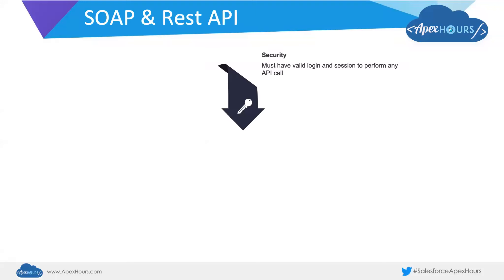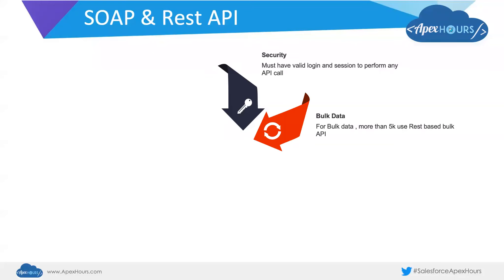For bulk data loads, there are REST-based bulk APIs inside Salesforce. As a best practice, if you need to process more than 50,000 records, use the REST-based Bulk API. You can also use Platform Events for remote call-in — the same Platform Event used to send data outside Salesforce can be used to create events inside Salesforce, in which case Salesforce becomes the subscriber, not the publisher.